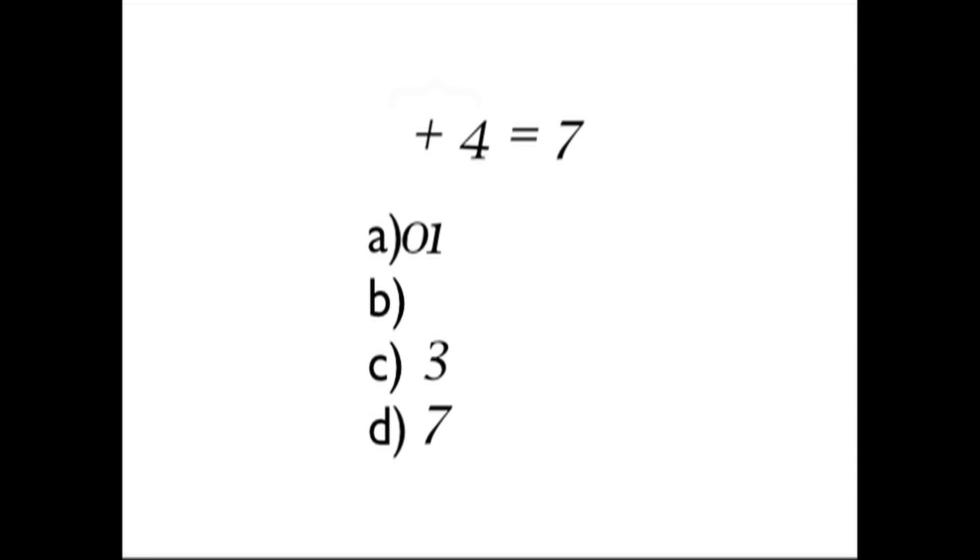Let's try choice B. 0 plus 4 is 4. We're supposed to be equal to 7, so choice B is incorrect. Try choice C. 3 plus 4 is 7. So we can see through working backwards that 3 gives us a true statement and therefore is the correct answer.